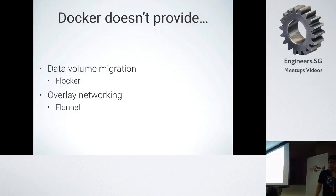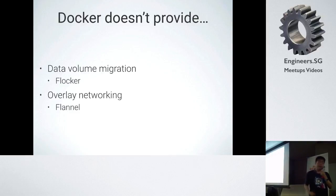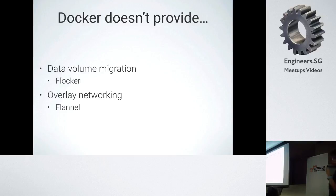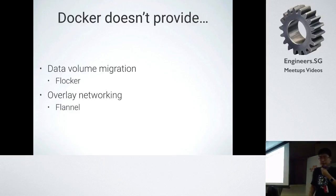There are some things that Docker doesn't provide. One common question is: how do you migrate data containers? For example, if you have a cluster and move your app containers to a different server, how do you ensure that your data goes with you? You have to make use of external software. Also, there are certain features like overlay networking — how do you address each container with a certain IP — and projects like Flannel let you do that.